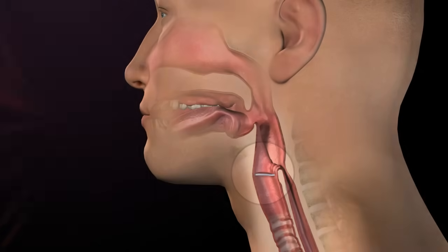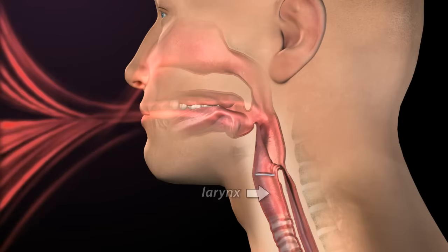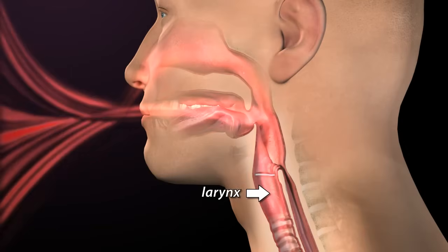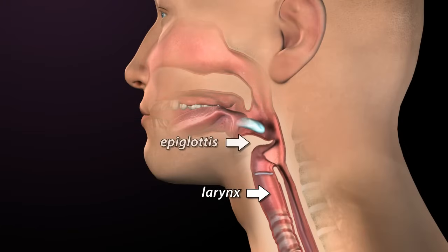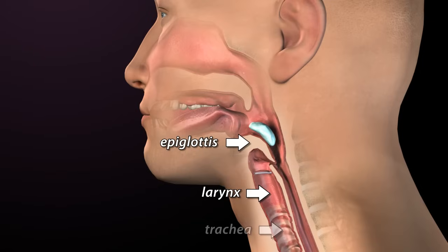During a normal swallow, the larynx elevates and moves forward and acts as a mechanical lever. This action causes the epiglottis to flap over the trachea, protect the airway, and direct food or liquid into the esophagus.